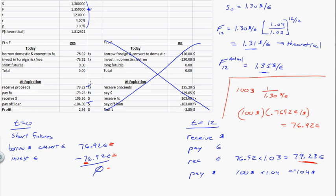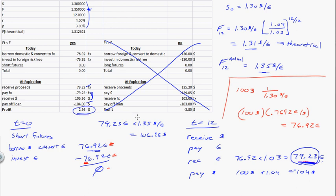These cash flows unwind the futures contract. You've entered a futures contract to sell exactly 79.23 euros — that's the amount you borrowed and invested. If you sell 79.23 euros at $1.35 per euro, you receive $106.96. Your net position is a profit of $2.96.